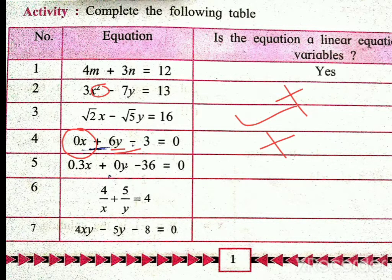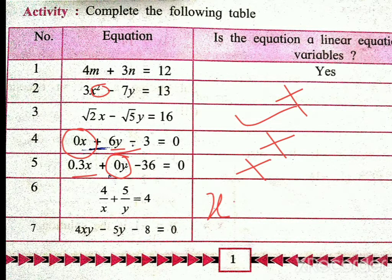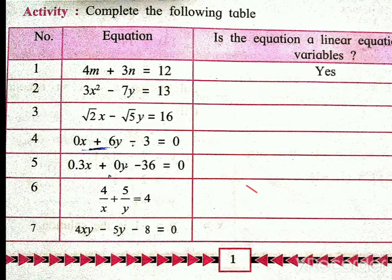Similarly, in the fifth equation also, the term of y will be equal to 0, so it is also not an equation in two variables. In the sixth equation, 4 upon x plus 5 upon y is equal to 4 — this equation is not a linear equation in two variables because variables are 2, but degree is not 1.